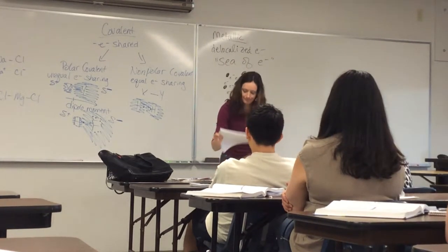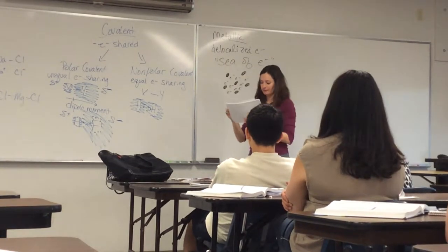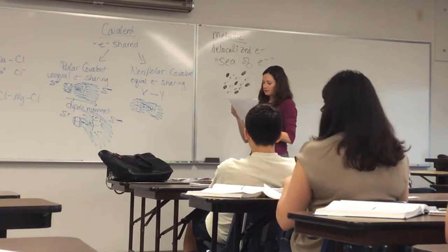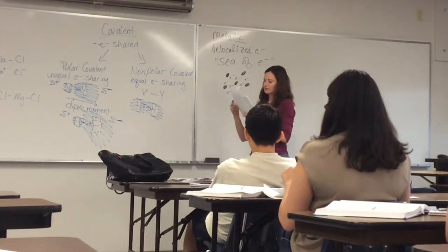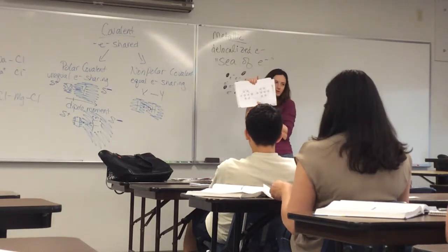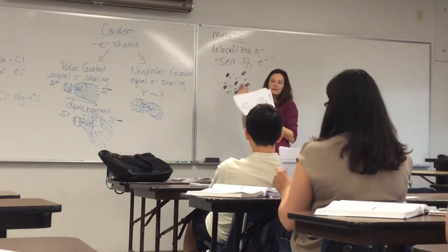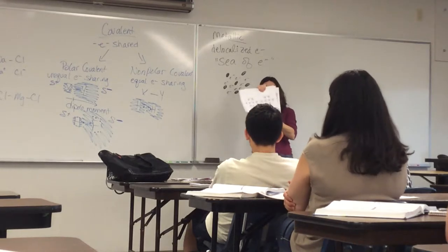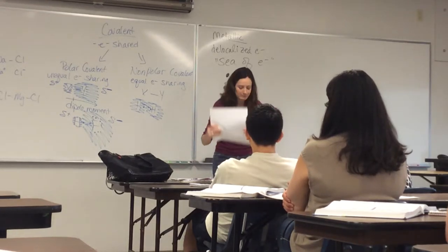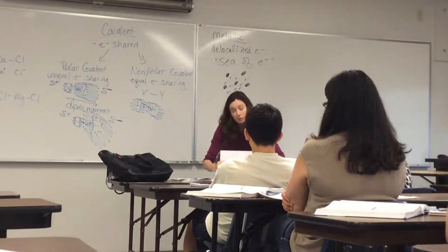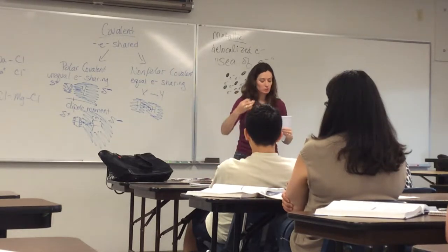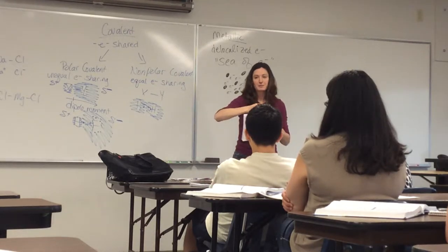For metallic bonds, there are delocalized electrons — you have those called the sea of electrons. Your handouts also have another picture of what the sea of electrons looks like. Any questions about the different types of bonds, where they come from, or how to name them?